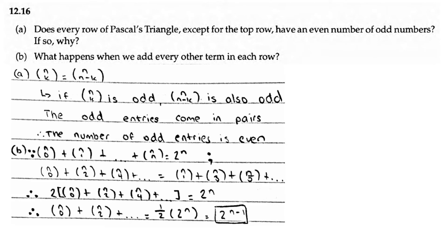AoPS Counting and Probability 12.16. Does every row of Pascal's triangle, except for the top row, have an even number of odd numbers? If so, why?